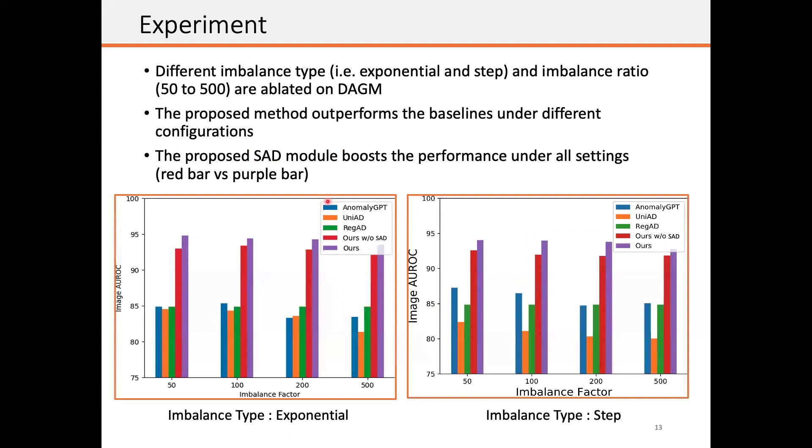Take the DAGM dataset for example. Our method in purple bar outperformed all the baselines on different imbalance types and imbalance factors ranging from 50 to 500. Moreover, when comparing the red bar and the purple bar, we find that adding the semantic AD module always improves the performance.